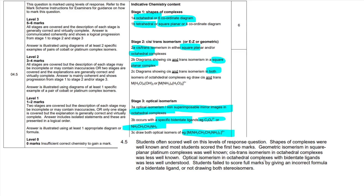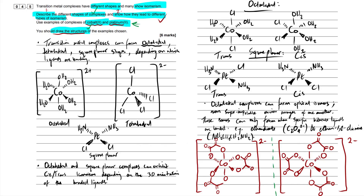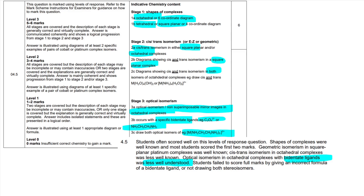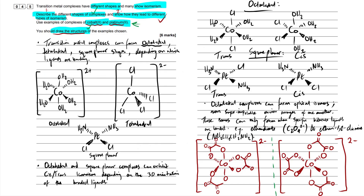Optical isomerism in octahedral complexes with bidentate ligands was less well understood. Just remember it must be a perfect mirror image — if one ligand goes right the mirror image goes left, match the 3D bond orientations. The examiner's report also notes students lost marks by giving incorrect formulas for bidentate ligands and by not drawing both stereoisomers. So always draw both, especially with optical isomers — you can't show just one and expect marks.